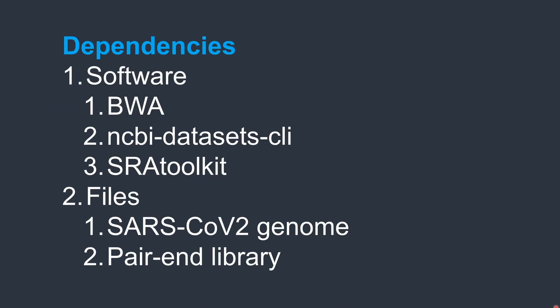Today we will show an example of how we can align paired-end reads to the coronavirus genome. The coronavirus genome is relatively small, so we can perform the alignment using a personal computer. We need to install some dependent software: BWA, the NCBI datasets command line interface to download the coronavirus genome in FASTA format, and SRA toolkit to download the paired-end sequencing library from the SRA database.